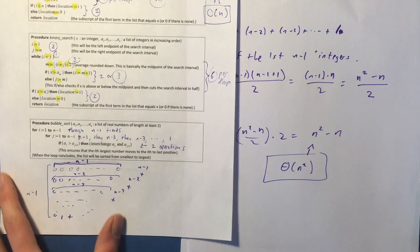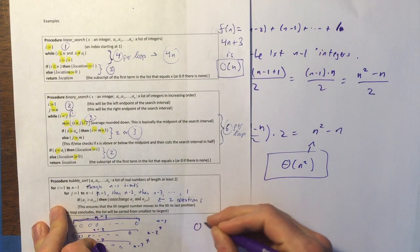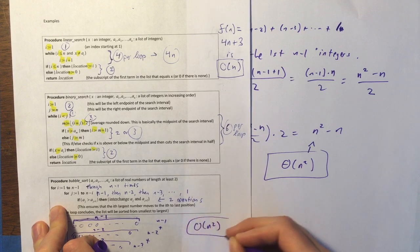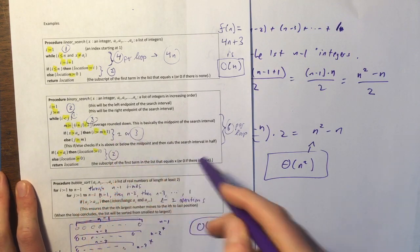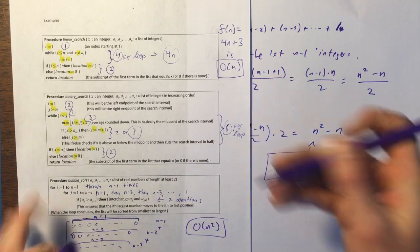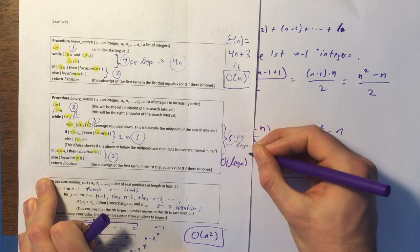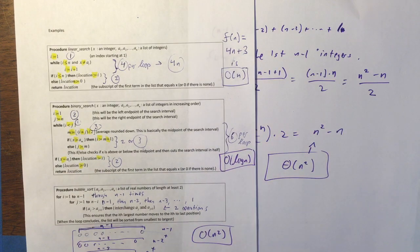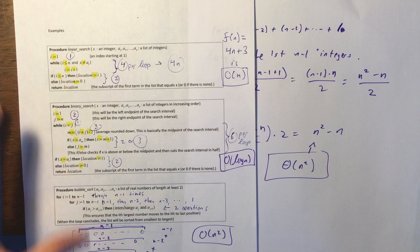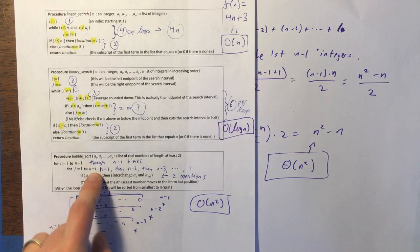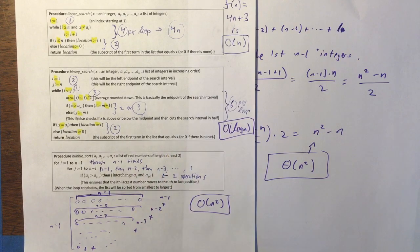So now we have these three algorithms. The fastest of them is the binary search, which ended up being big O of log n. Then we have the linear search, which is big O of n. And then we have bubble sort, which is big O of n squared — so that would be the slowest of the three.